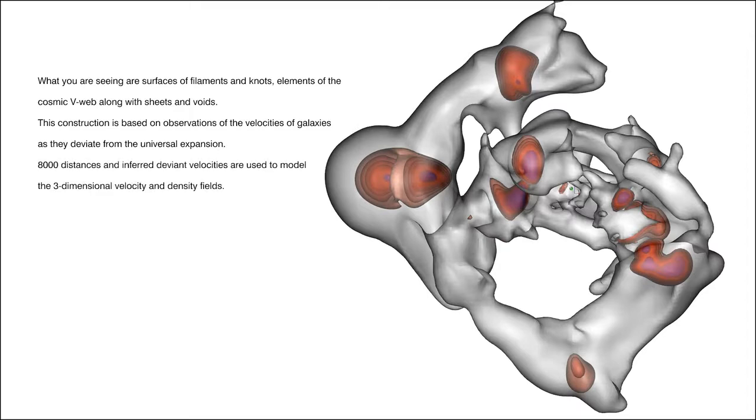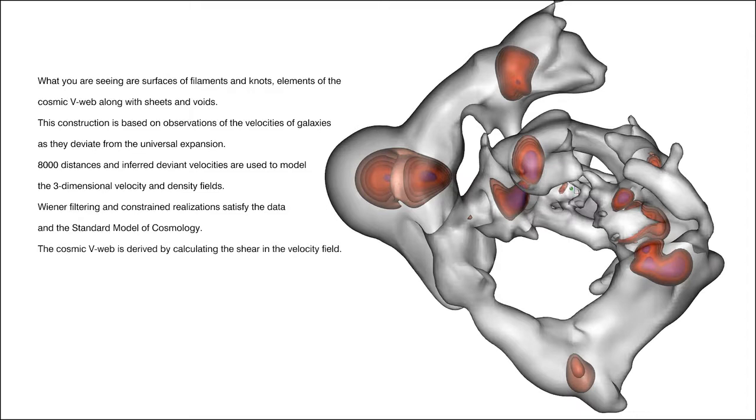8000 distances and inferred deviant velocities are used to model the three-dimensional velocity and density fields. Wiener filtering and constrained realizations satisfy the data and the Standard Model of Cosmology.